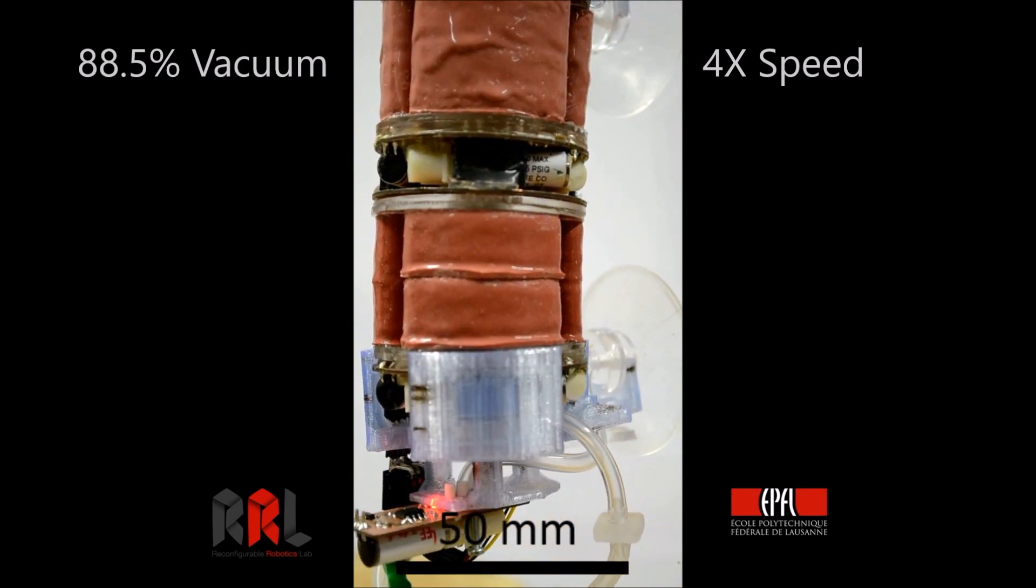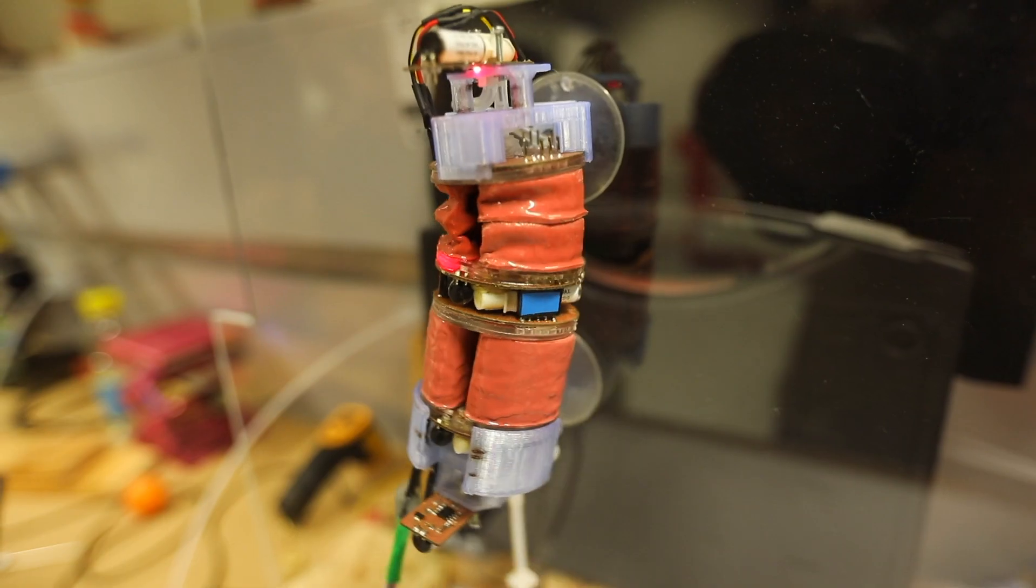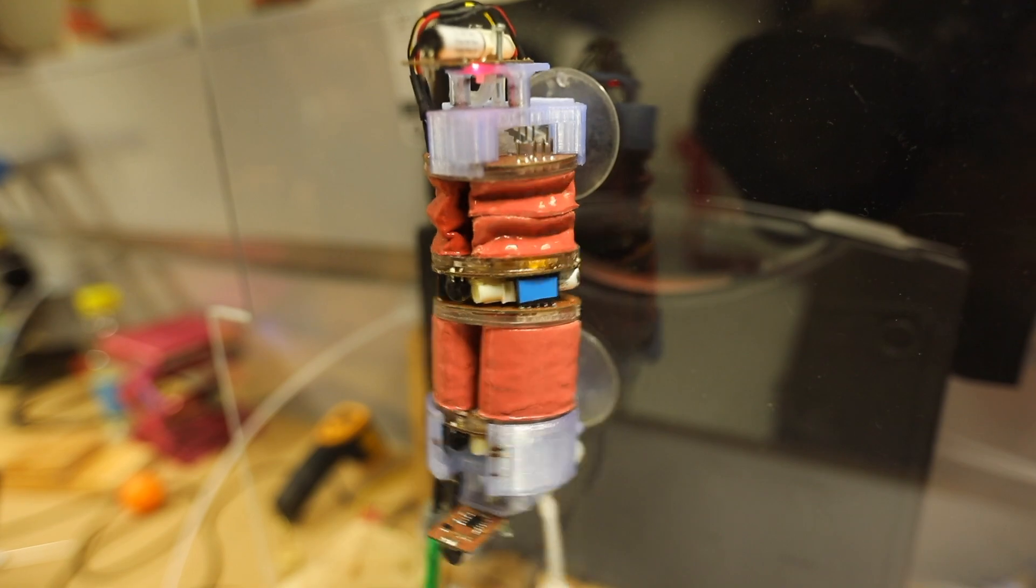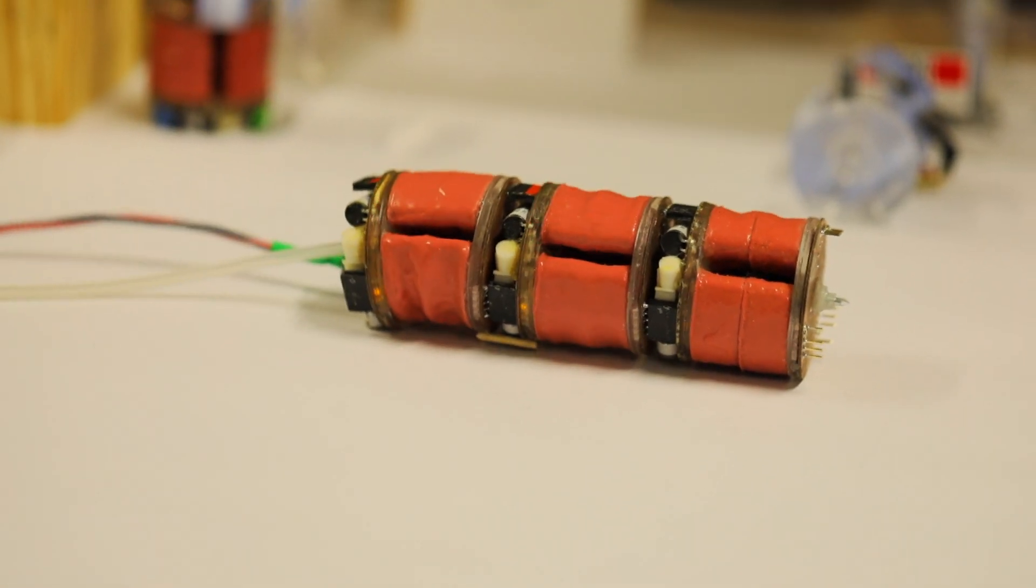If you were to put a grasper on it, then you can have a delicate object grasper. If you were to put a suction cup on it, it can climb up walls. By putting multiples of them together, you can recreate snake locomotion.